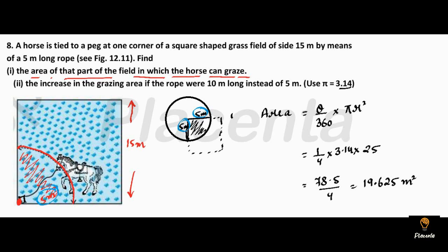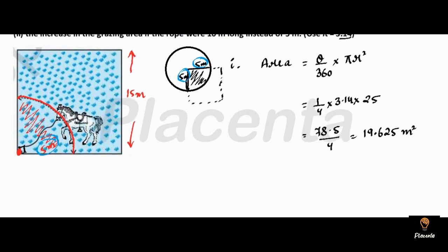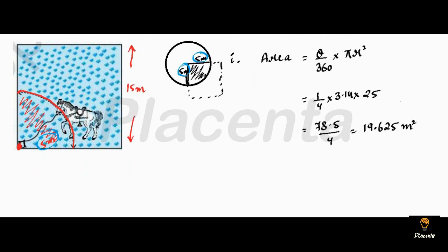That was the first part of the question. Now let's read the second part: find the increase in grazing area if the rope were 10 meters long instead of 5 meters. So if the rope length is changed from 5 meters to 10 meters, how much will the area increase?